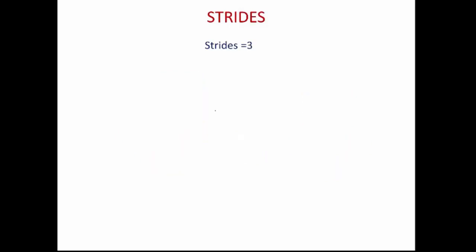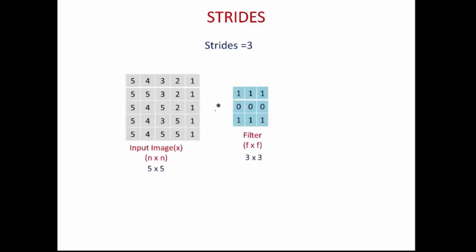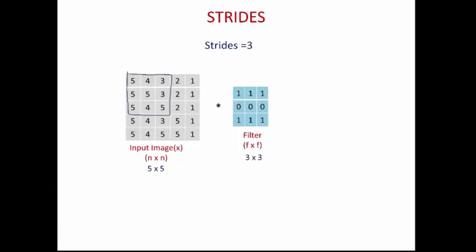Let me take another example with stride=3 on a 7×5 input image convolved with a 3×3 filter. Since stride is 3, you shift the filter 3 pixels to the right. At that point, the filter is hanging outside the input image, so this operation cannot be performed.